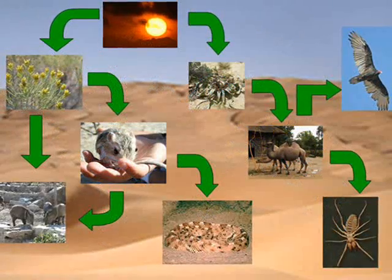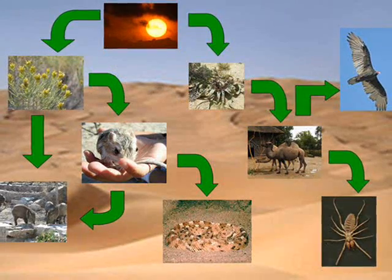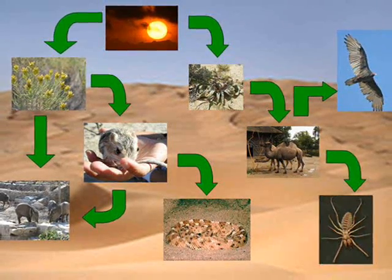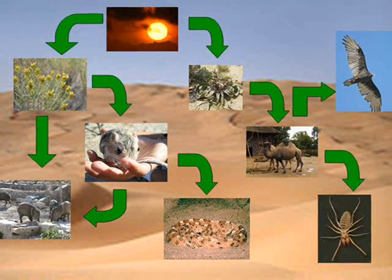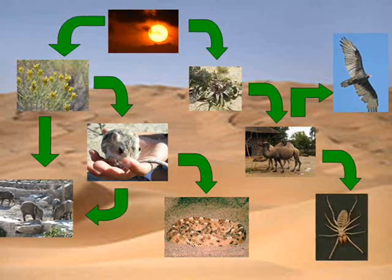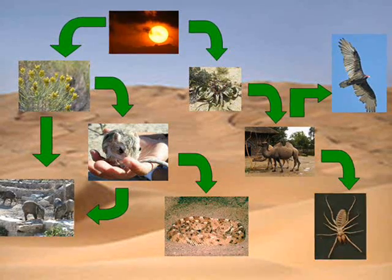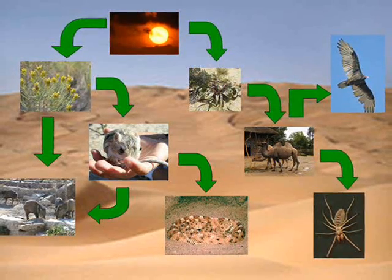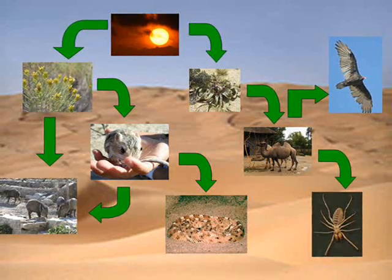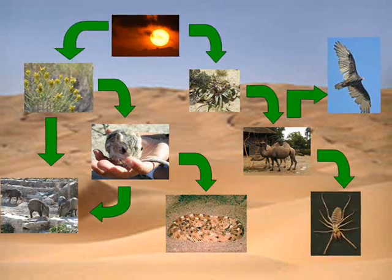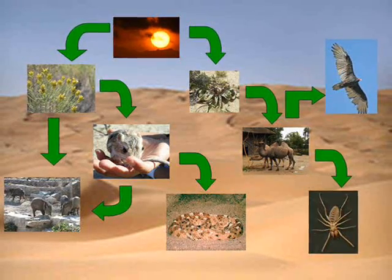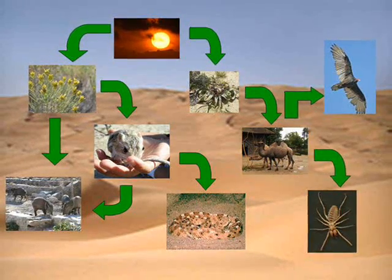The food web is a diagram showing how energy passes from organism to organism. Most food webs show interconnections. This particular food web has the sun going to the wildflowers and the wawitzia flower, down to the camel, and the wildflowers down to the kangaroo rat, the kangaroo rat down to the javelina and the sidewinder, the camel to the turkey vulture and the camel spider. The arrow goes from the organism that gets eaten to the organism that's eating it, because it's giving its energy to the bigger predator.